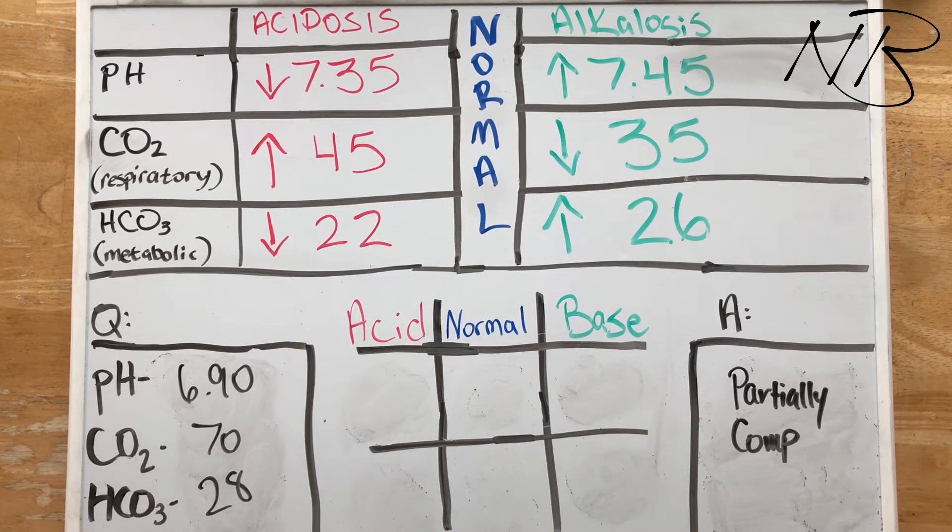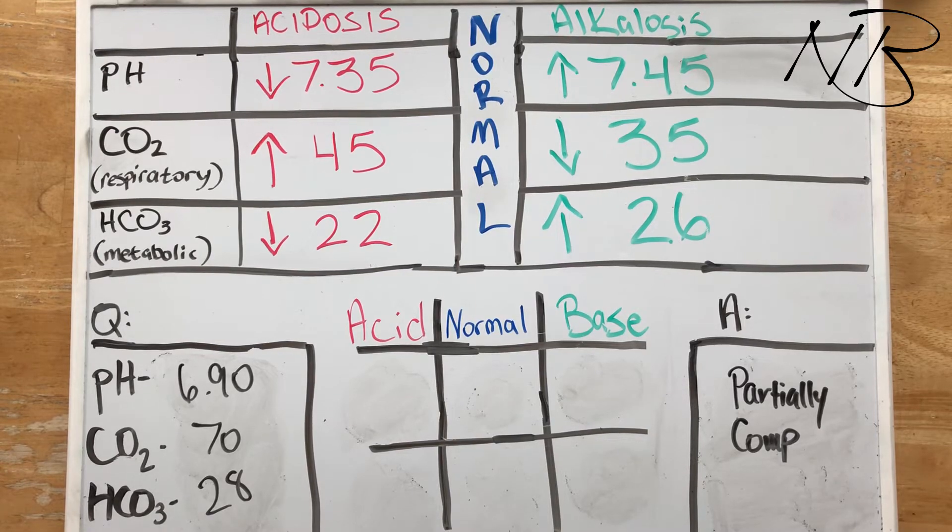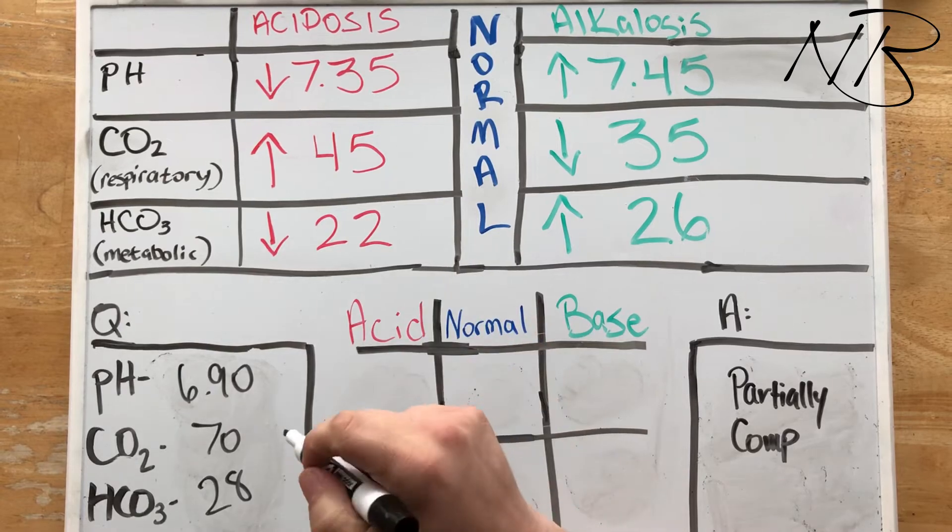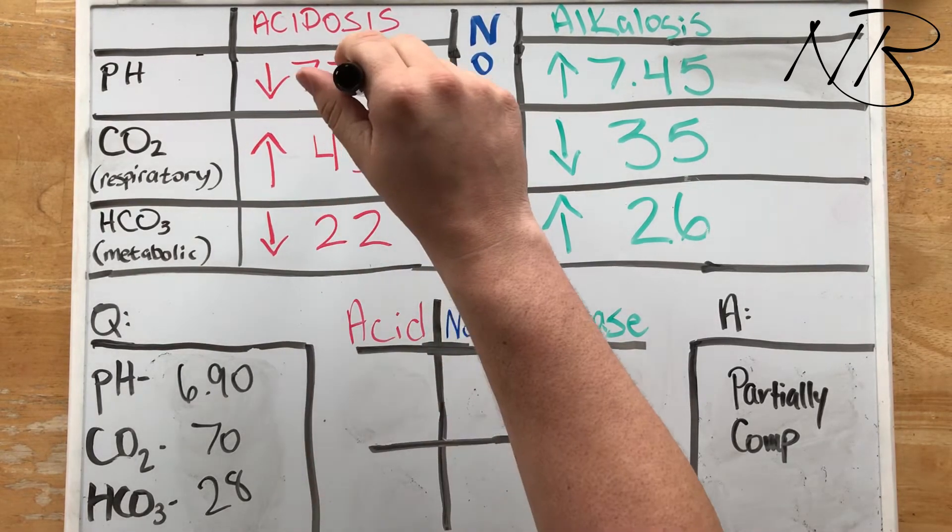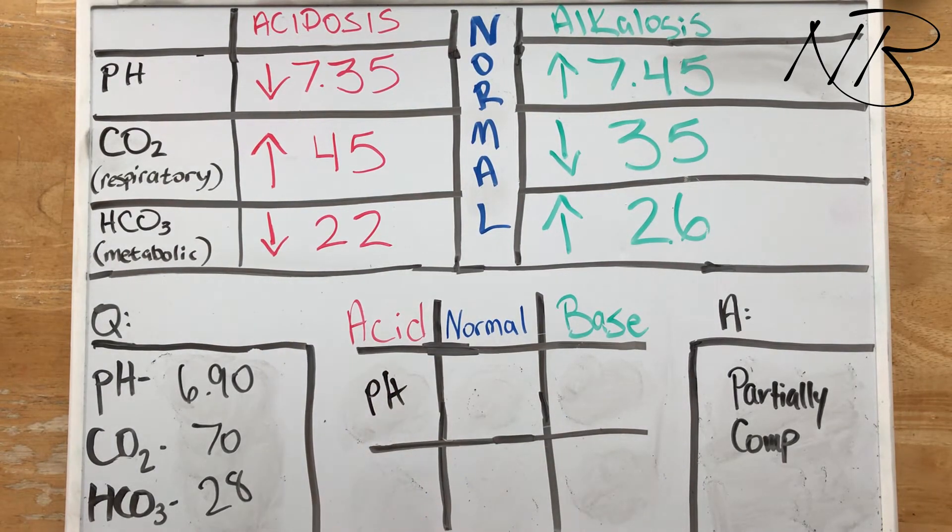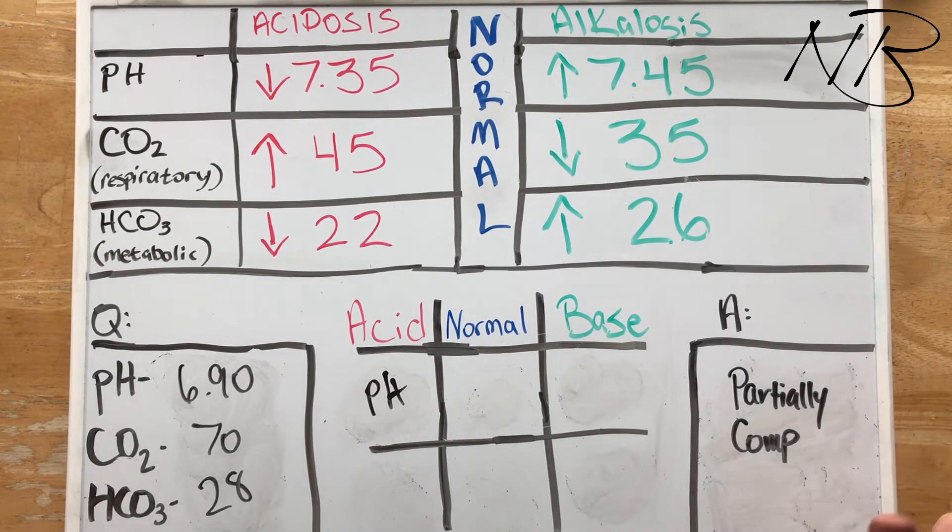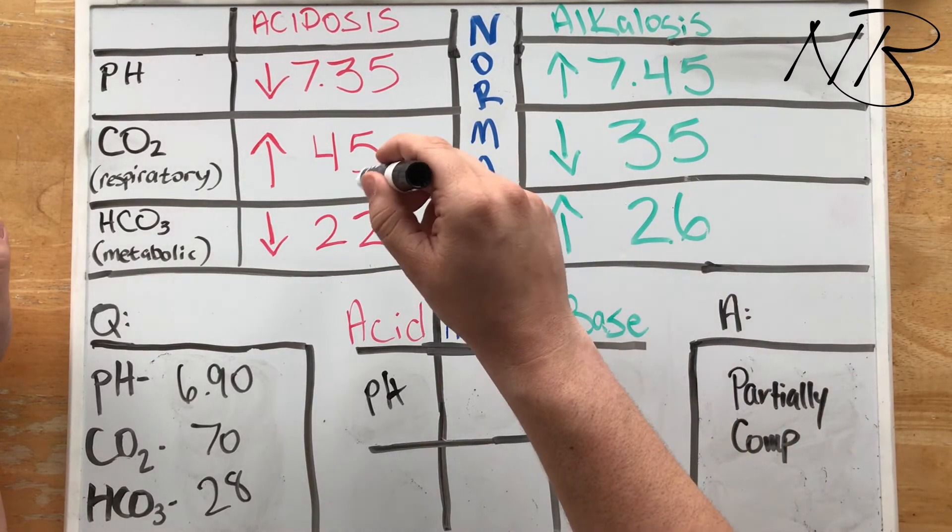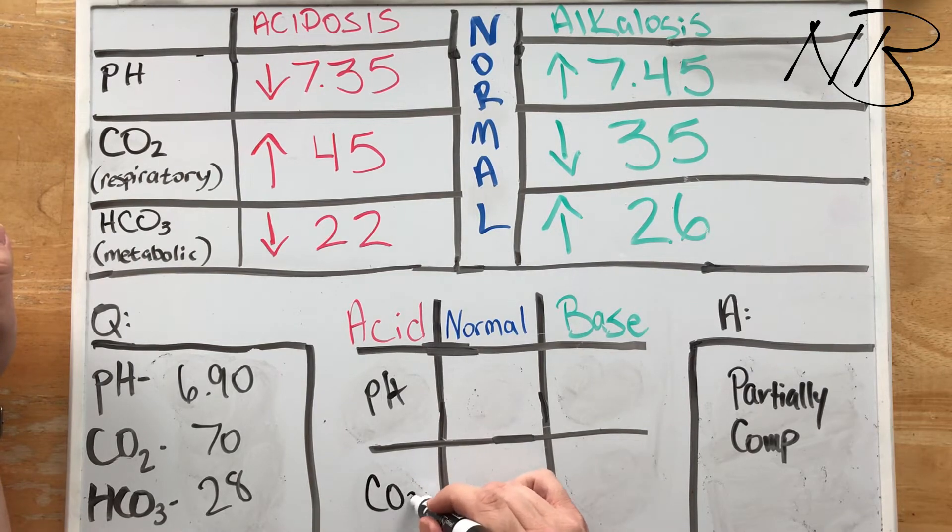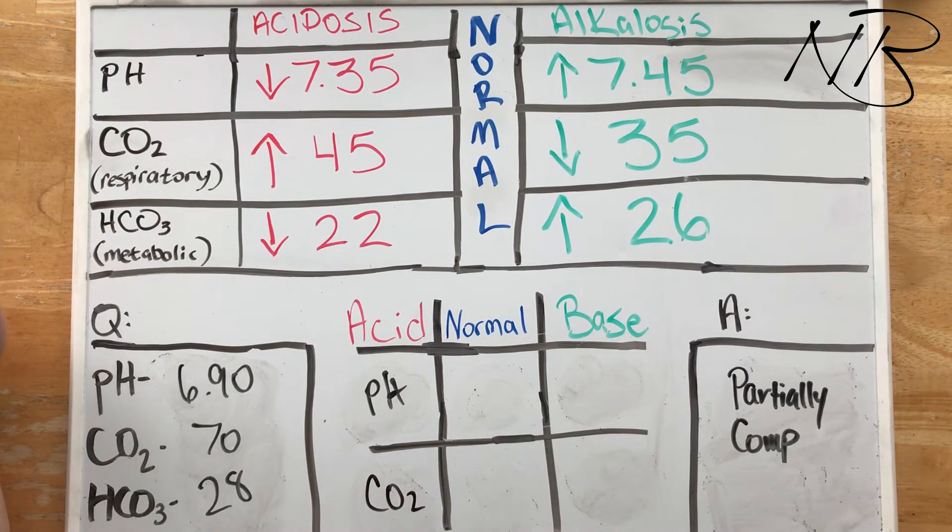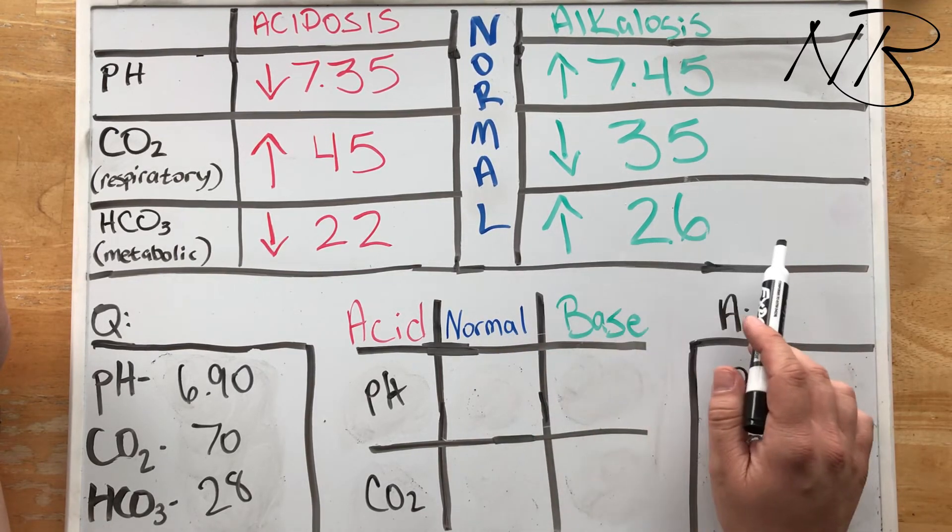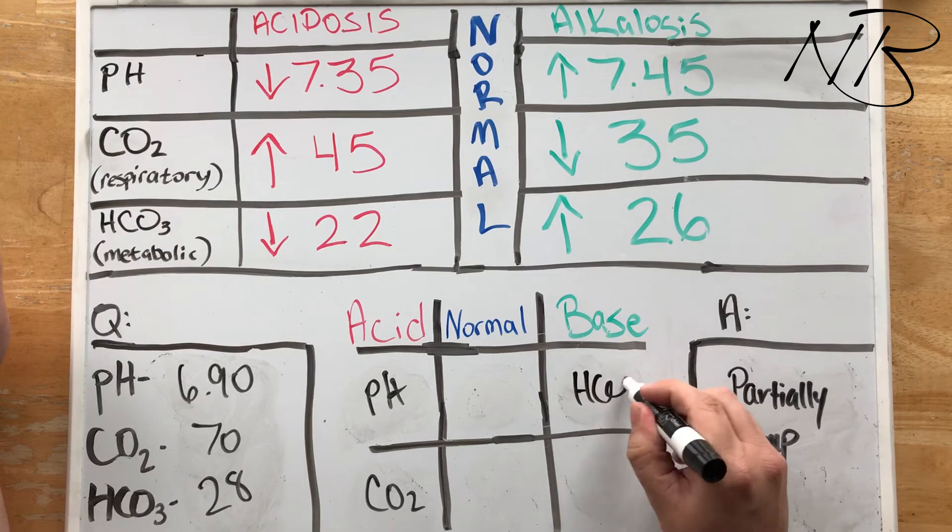So for our fifth and final question in this particular partial compensative trial by five, we have a pH of 6.9. I know what you're thinking, like what? That's crazy. I've seen it, so it can happen. 6.9 less than 7.35, so we are definitely acidotic. CO2 is 70. Again, you're thinking that's wild. I've seen worse. That's less than 45, so that is going to fall in our acidotic column as well. And our bicarbonate in this case is 28, which is above 26, so that's going to go in our alkalosis column.